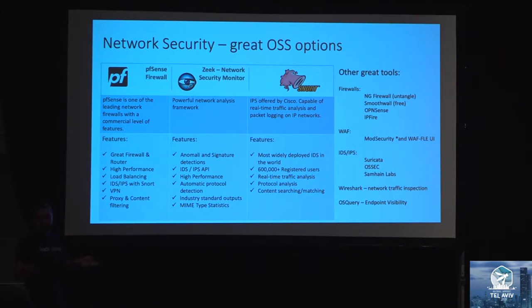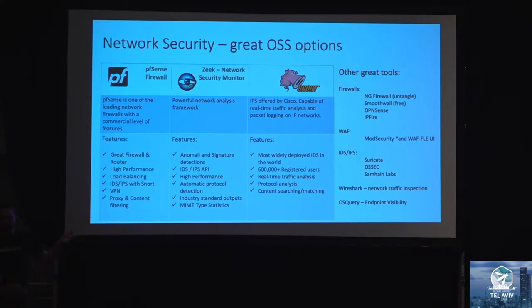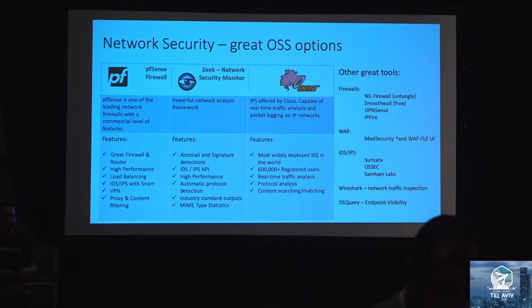PFSense has a firewall — you can easily add this to your home or small office and have firewall and routing options. For on-premises use they also have some extension to the cloud, so you can add rules to allow access based on restrictions or policies to your cloud environment.